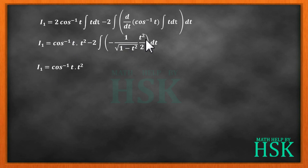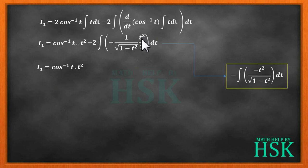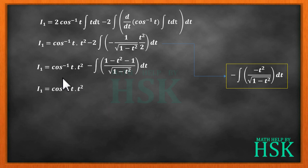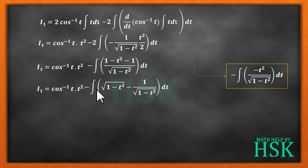To handle the remaining integral, we use the trick of writing -t² = -(1 - t²) + 1, then adding and subtracting 1 in the numerator. This lets us split the integrand and divide through by √(1-t²) to get: minus the integral of [√(1-t²) - 1/√(1-t²)] dt.